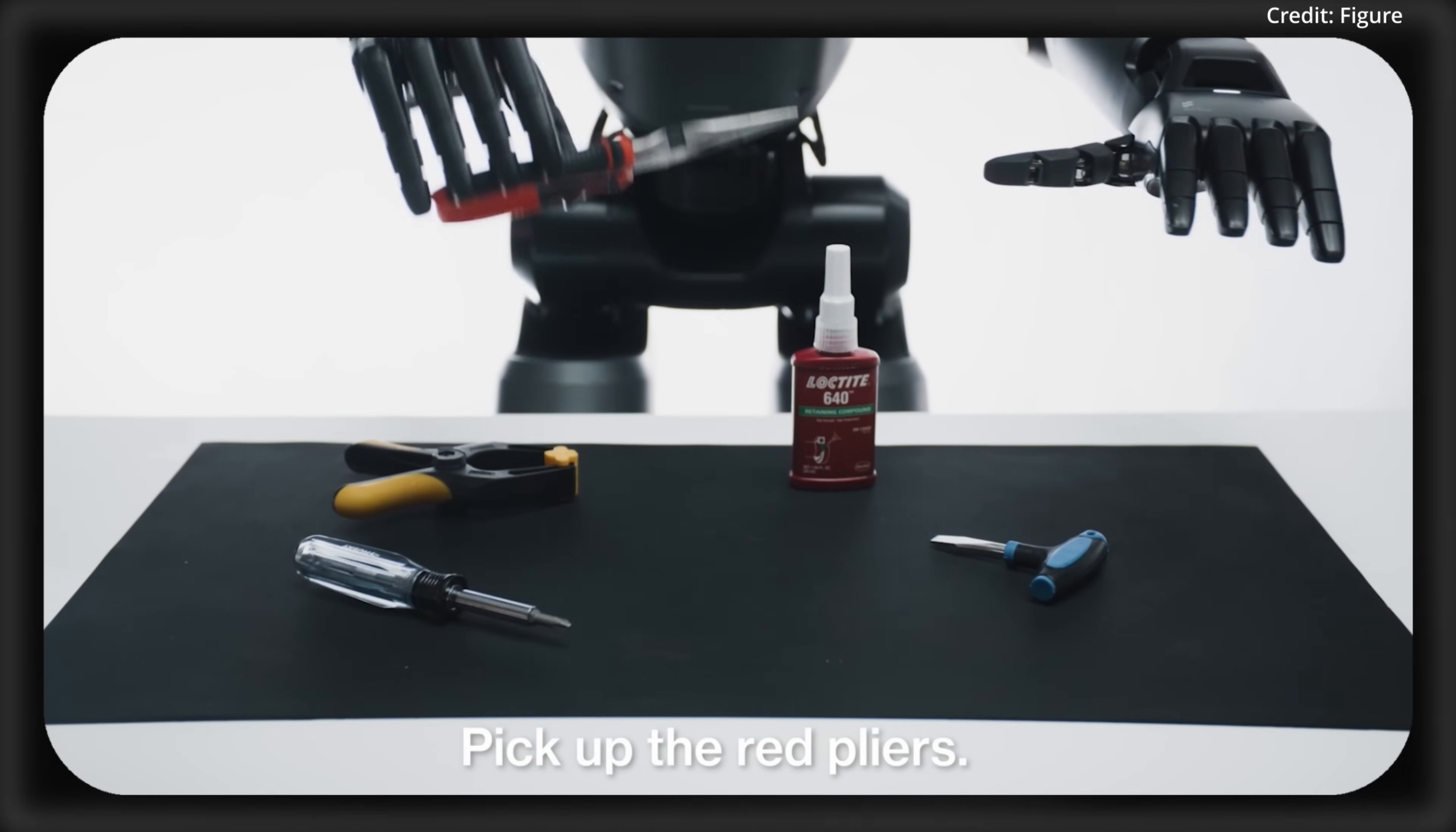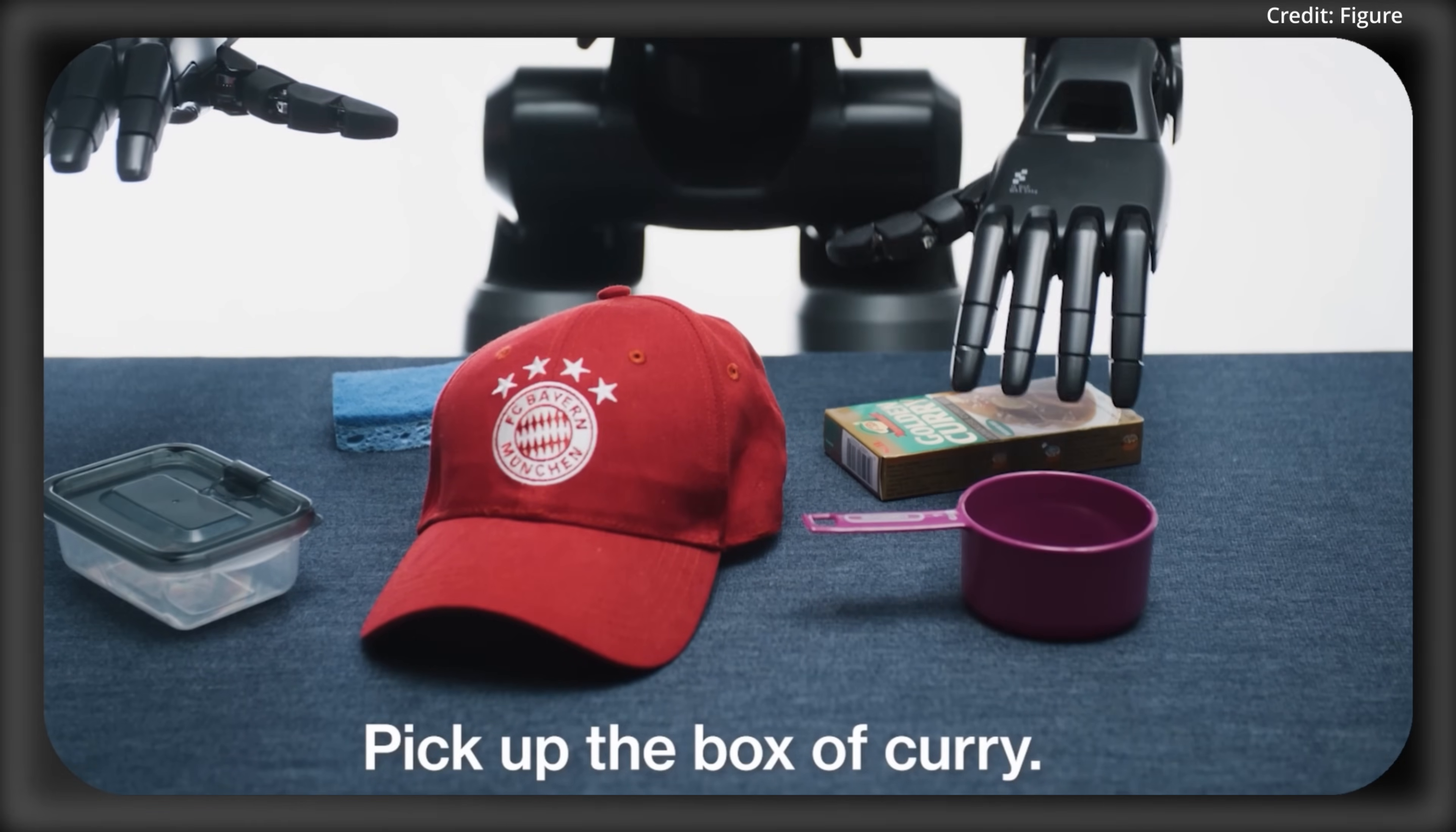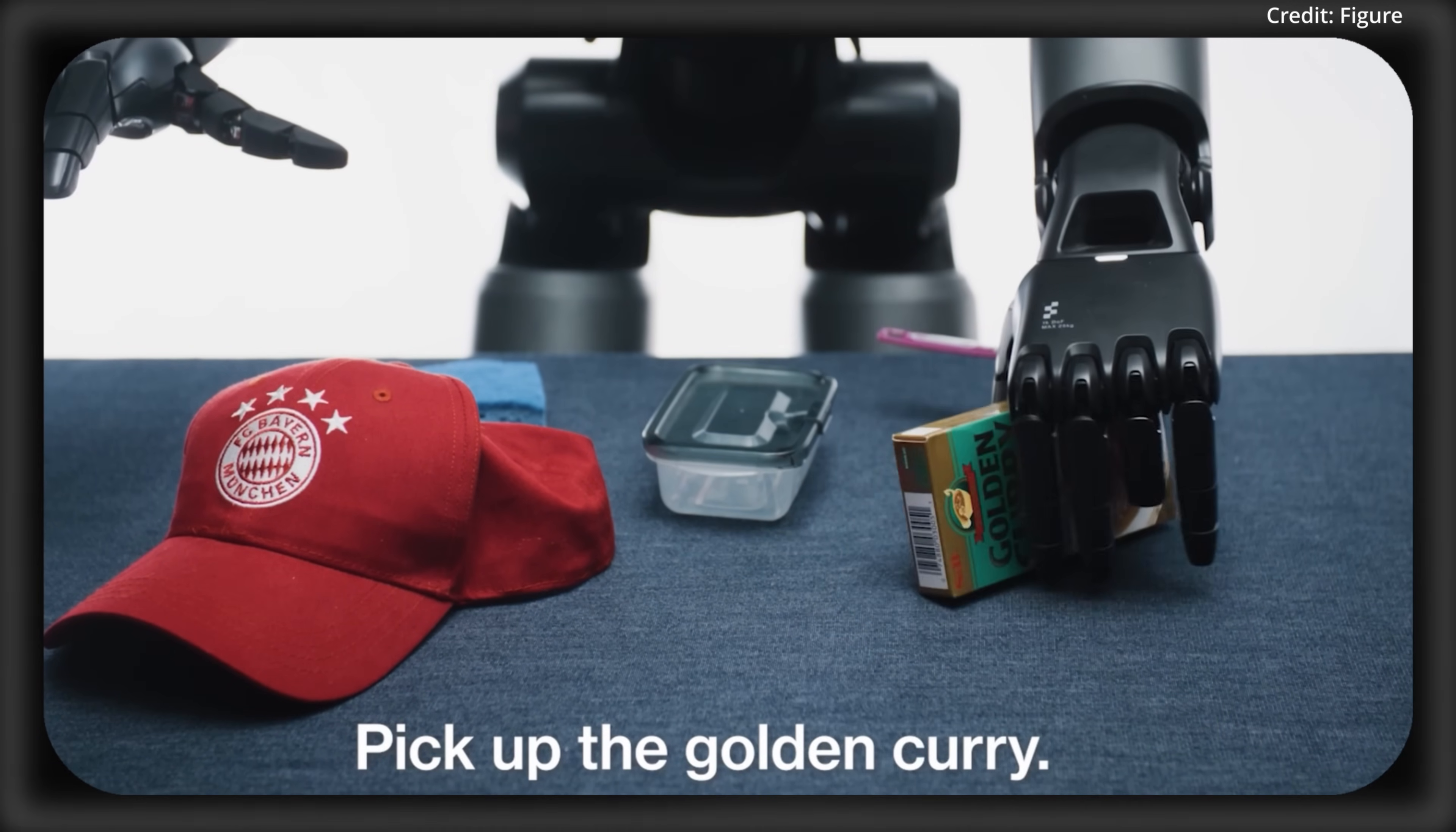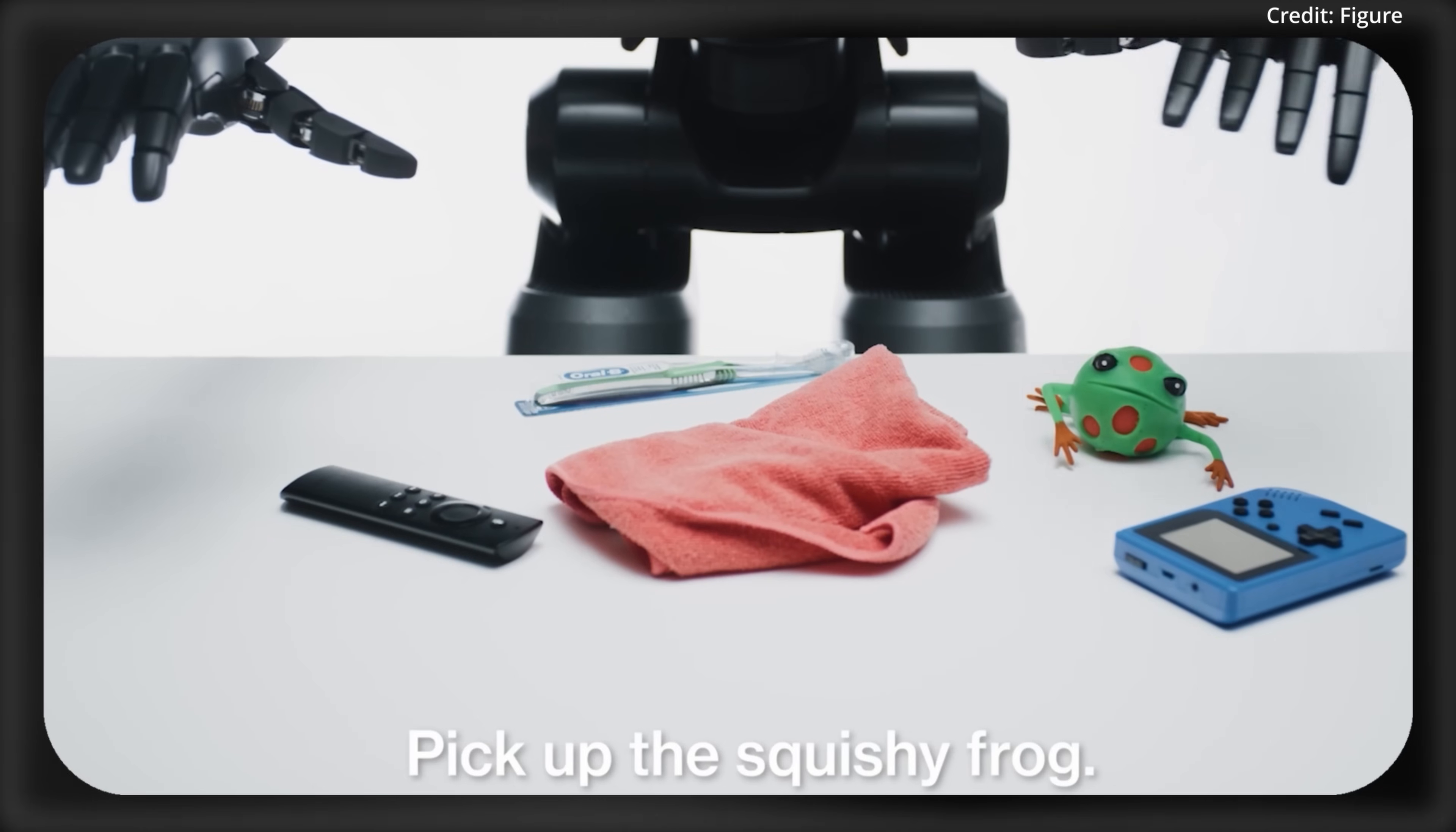Soon Helix could evolve to orchestrate full household tasks like cooking meals, assembling furniture, or managing chores with a single command. Not only that, but multi-robot teams maintaining entire spaces could even work together, adapting to new tools or layouts instantly, or even assisting humans with intuitive, language-guided care.